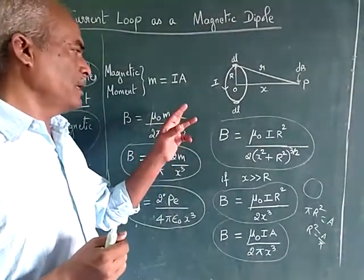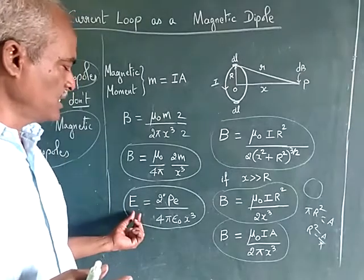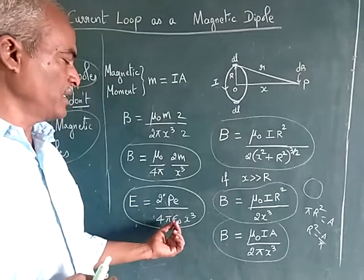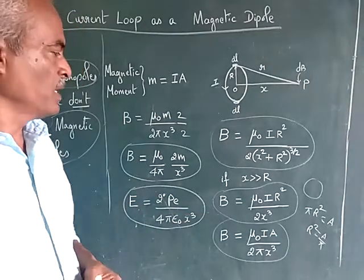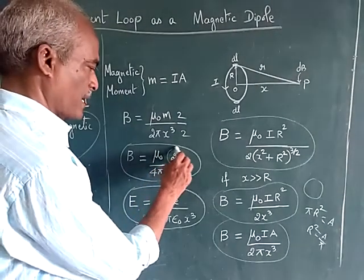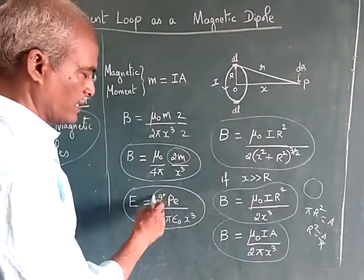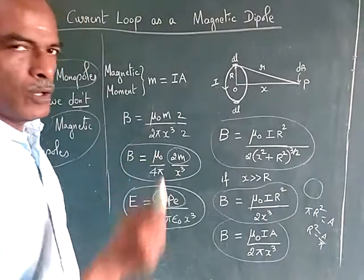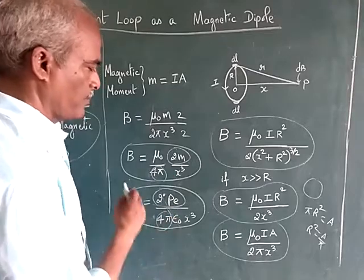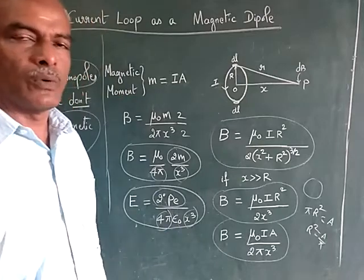We multiply by 2 and divide by 2 just to have it easy to remember. Because in the electric field, we saw that 2 into electric dipole moment divided by 4 pi into epsilon naught into x cube. Now, if you compare both equations, 2m magnetic field, you have twice the magnetic moment. Here also twice the electric field dipole moment. Here you have 4 pi, here also 4 pi. Here you have x cube and here also you have x cube. So what's the difference now?